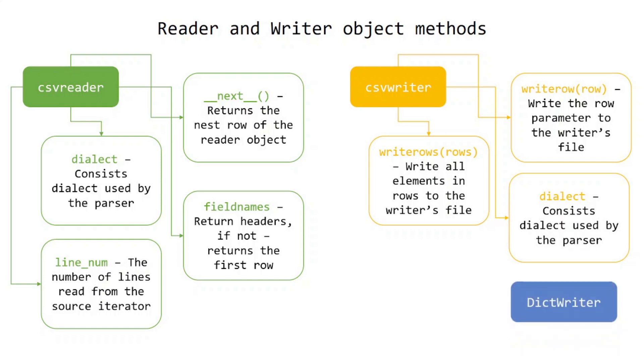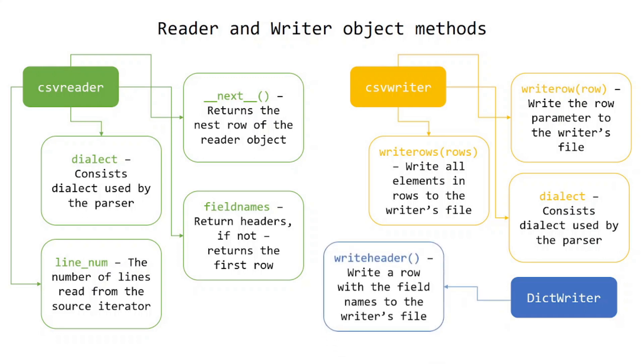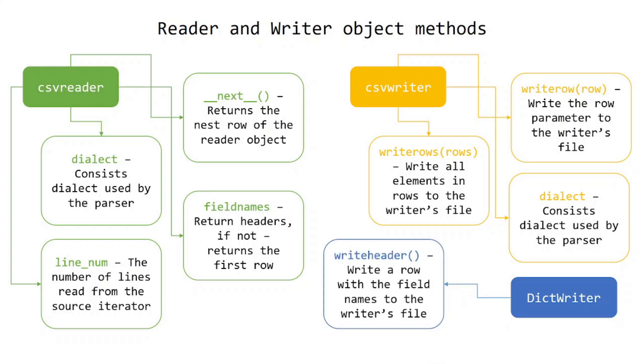DictWriter object has the writeheader() method, which writes a row with the field names to the writer's file.